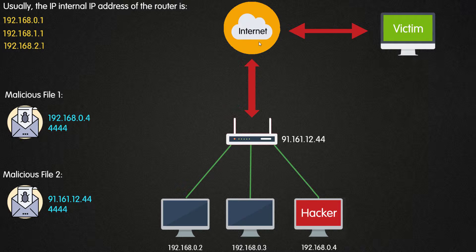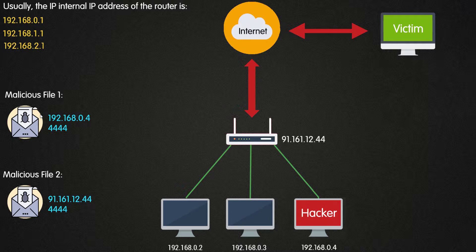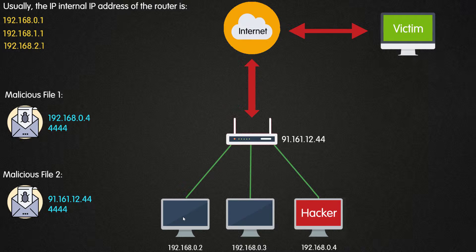The router is connected to the internet, and the victim is also connected to the internet — let's assume the hacker is in India and the victim is in the USA. The first malicious file has the hacker's private IP address 192.168.0.4. If the hacker sends this file to a device on the same local network and that device executes it, a reverse connection is received without needing port forwarding, since all devices are on the same network.